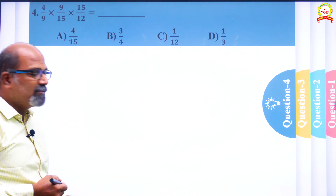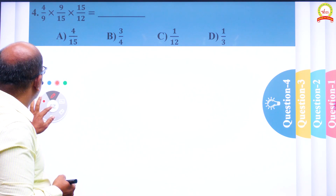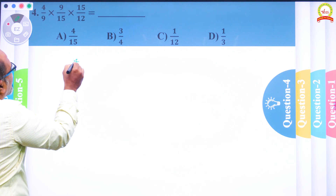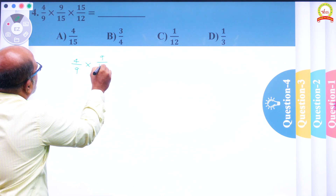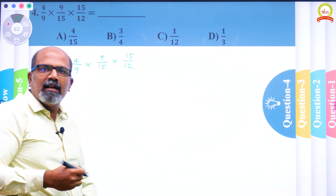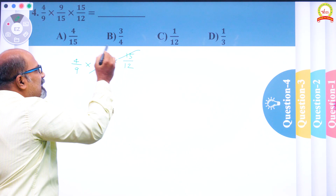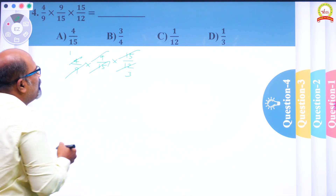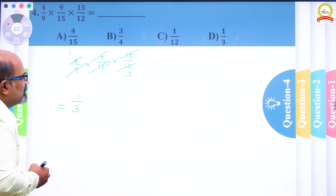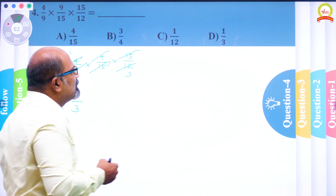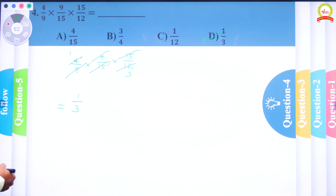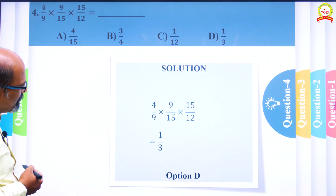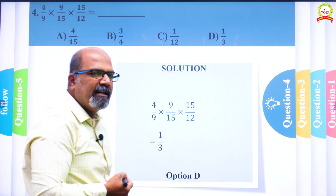The fourth question is a simple multiplication of rational numbers: 4/9 into 9/15 into 15/12. The 15s cancel, the 9s cancel, and 4 and 12 simplify — 4 goes once and 12 goes three times. So the remaining value is 1/3. Option D, which is 1/3, is the correct answer, and the printed solution confirms this.